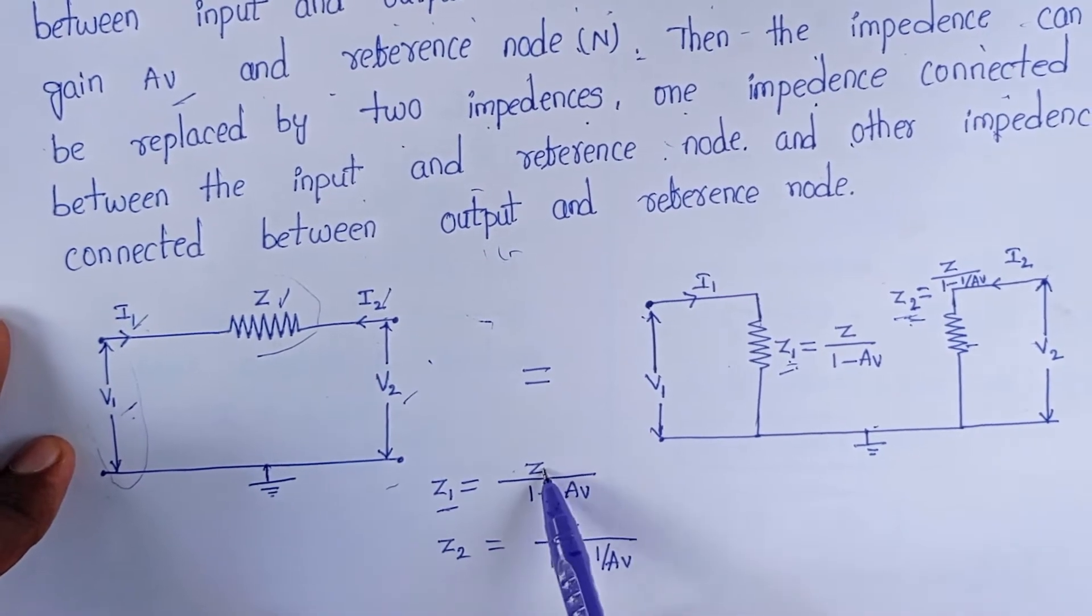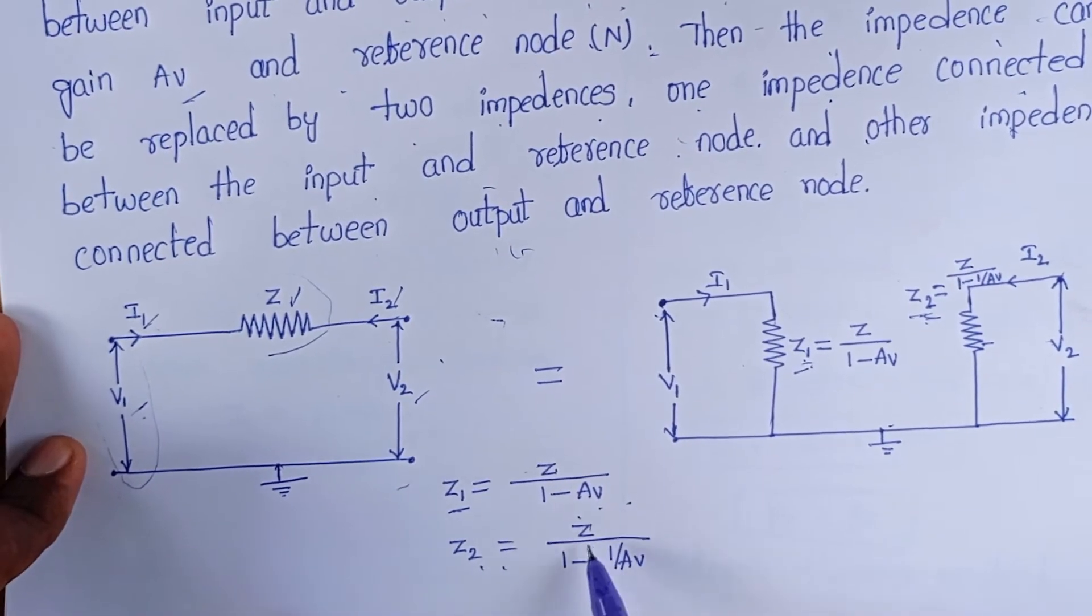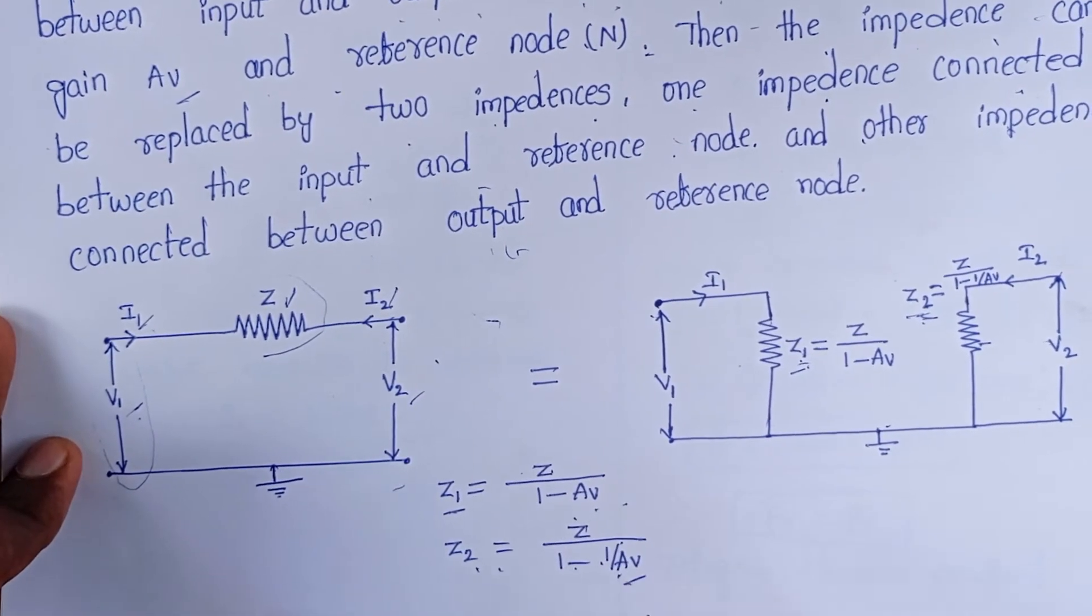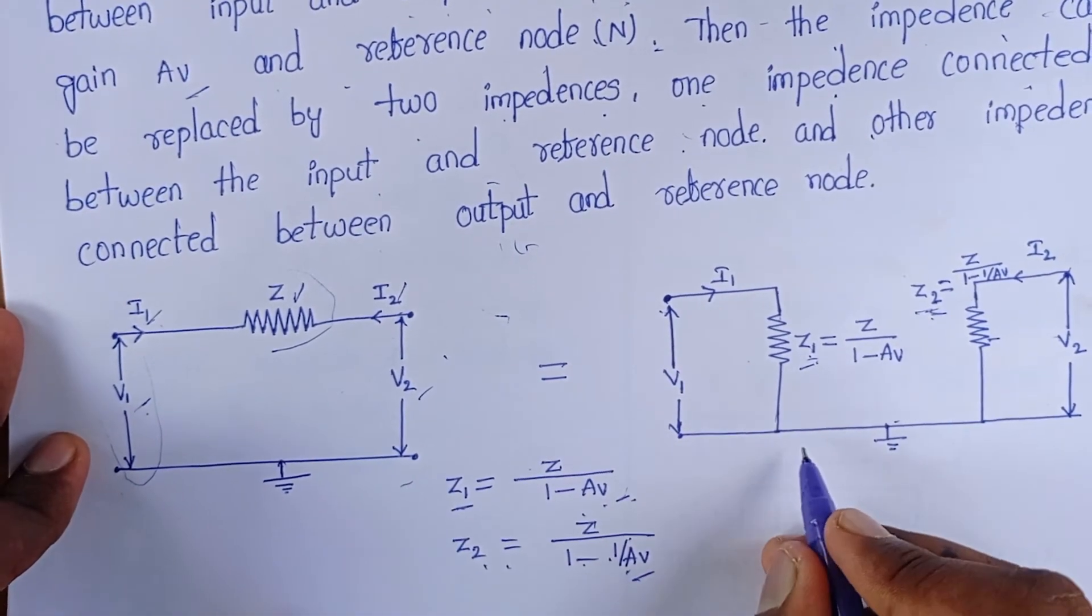Z1 equals Z by 1 minus Av. Z2 equals Z by 1 minus 1 by Av. Here, Av is the voltage gain of an amplifier.